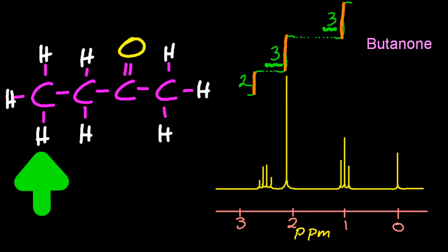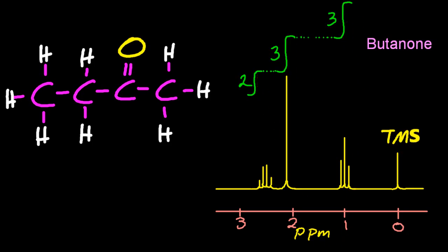But notice that they're split in different ways. And we're going to use that in this assessment statement to work out what's going on. The zero is TMS, tetramethylsilane. That's a different molecule. Don't worry about that when we're looking at the butanone. That's always at zero.